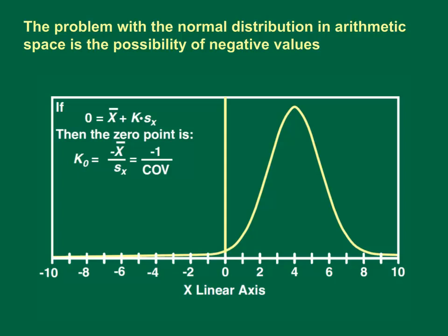To find the probability of a zero value, we set the frequency factor equation equal to zero as shown in the upper left. We then solve for the normal frequency factor that would result in a value of zero. We find that this value is equal to minus one times the average divided by the standard deviation, which is equal to minus one divided by the coefficient of variation, COV.